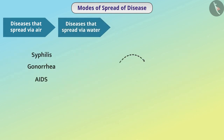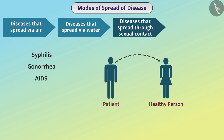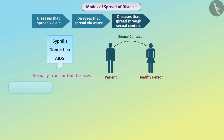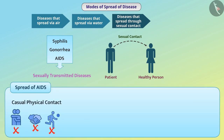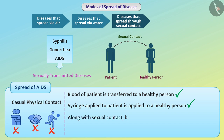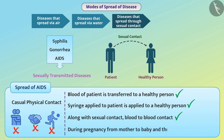Some diseases transfer from one partner to another through sexual contact. Such diseases are called sexually transmitted diseases. These diseases do not spread through casual physical contact. AIDS also spreads if the blood of an AIDS patient is transferred to a healthy person, or if a syringe used on an AIDS patient is used on a healthy person. Therefore, along with sexual contact, AIDS also spreads through blood-to-blood contact, as well as during pregnancy from mother to baby and through breastfeeding.